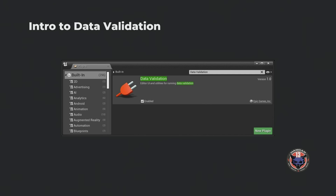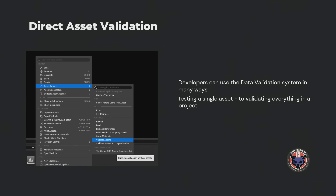What is data validation? It's kind of what it says on the label — it's a plugin in Unreal that you can very easily enable. It allows you to validate assets. The most straightforward way is to just right-click on an asset and choose validate asset. You can do it for individual assets, for folders, or you can actually write commandlets and validate everything in a project.